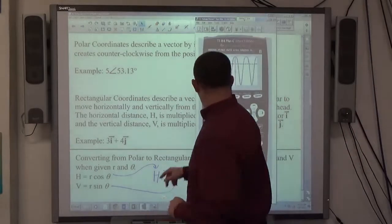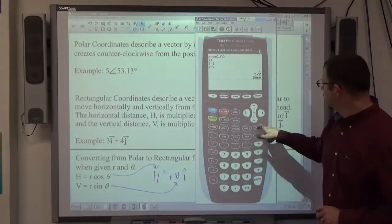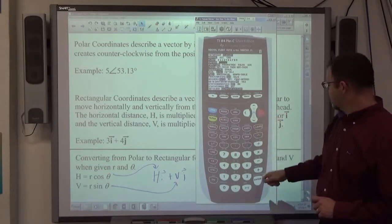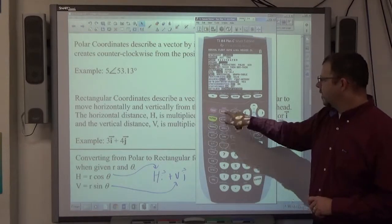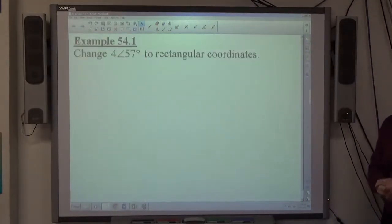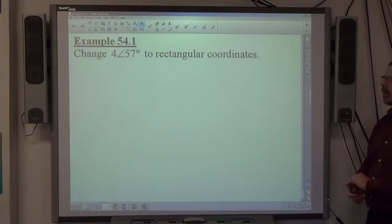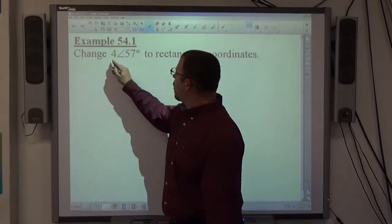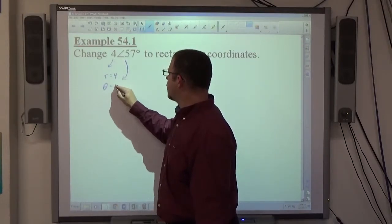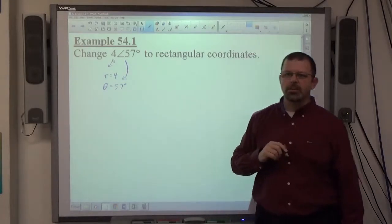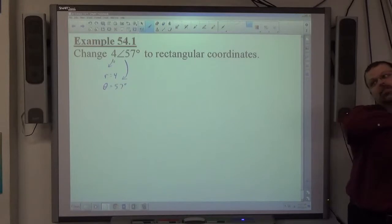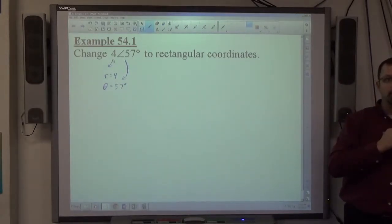Let me just quickly convert mine. I have my calculator from earlier. I've set my mode, currently I'm in radians, I've got to switch to degrees. As long as you're in degrees, and your calculator is turned on, you should be able to get these right. So, change 4 angle 57 degrees to rectangular coordinates. My polar form tells me that r is equal to 4, and theta is equal to 57 degrees. What does r stand for? R is the length of the vector, and theta is the angle it creates from the positive x-axis counterclockwise around the unit circle.